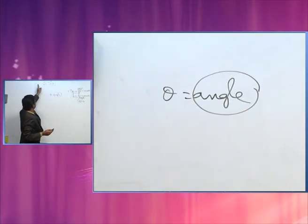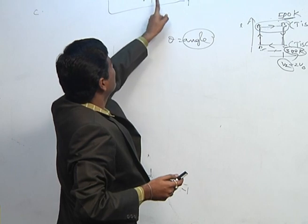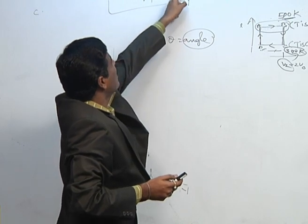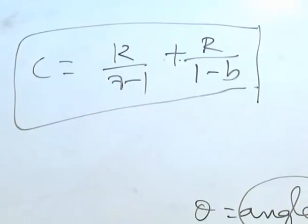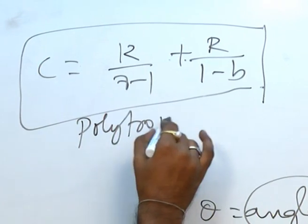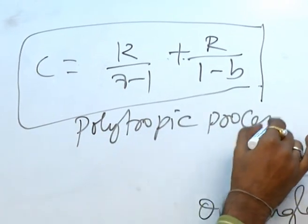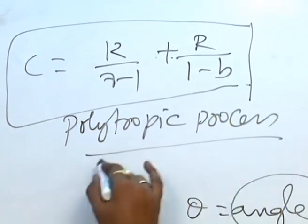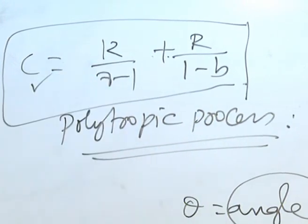We conclude that the molar specific heat for a polytropic process is C = R/(γ - 1) + R/(1 - n), where n is the polytropic constant. This completes the discussion of the polytropic process.